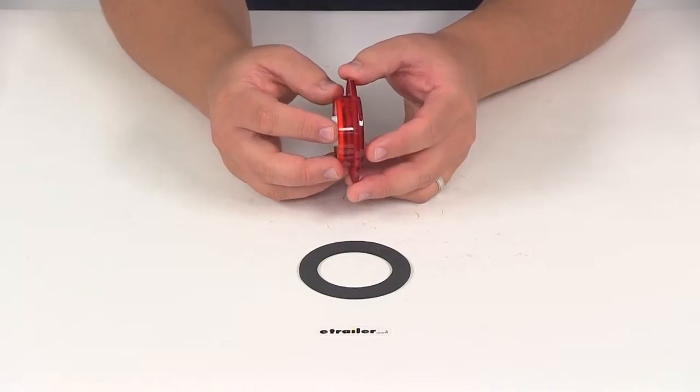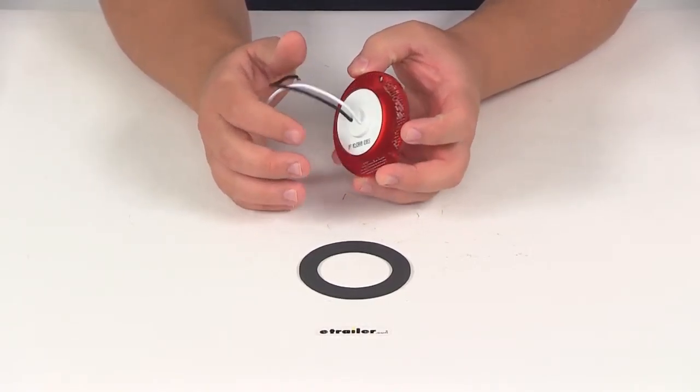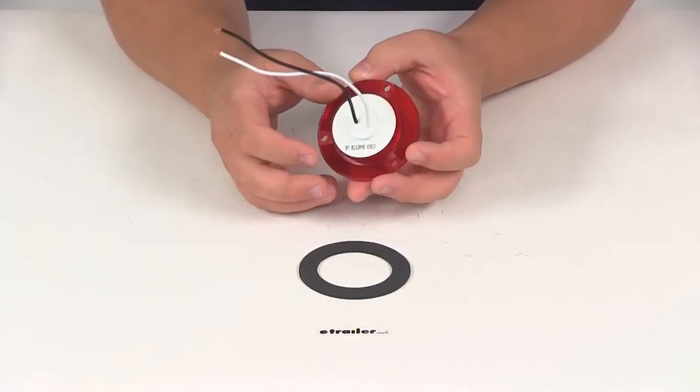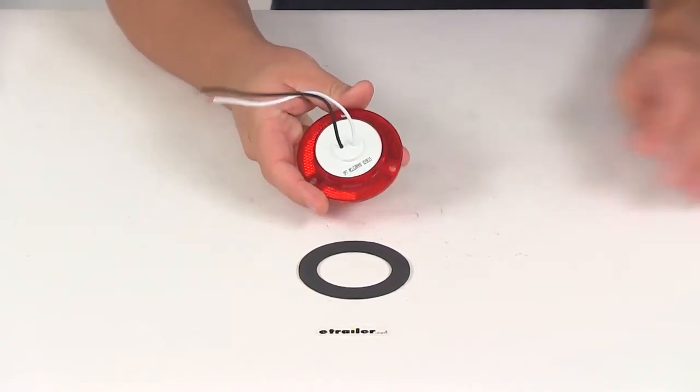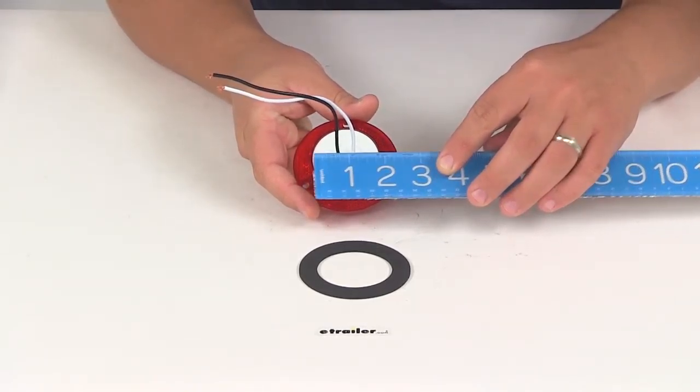This is a recessed mount installation with a built-in mounting flange here, and this portion is the recessed area. Taking a measurement of that recessed area, we get about two inches.